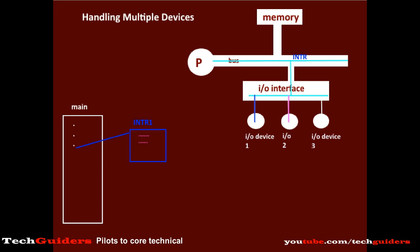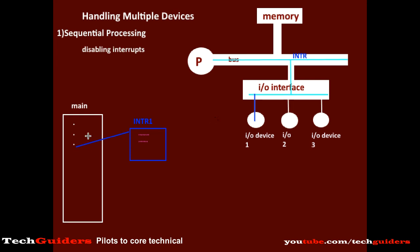One approach used is sequential interrupt processing with disabling the interrupts. Here, while an interrupt is being handled, further interrupts are disabled from other devices. Hence, interrupts from other devices will be ignored for the time being and will remain pending. After completing the current routine, the control is returned to the previous point, and from there, the pending requests are handled in sequential order.